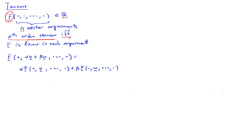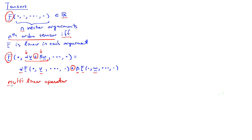What I mean by linear in each argument is that if I take f and apply it to a linear combination of two vectors — a scalar alpha times v plus a scalar beta times w — then the result is alpha times f acting on v, plus beta times f acting on w. So we'd often call this a multilinear operator, because it's linear not just in one argument but in multiple arguments.